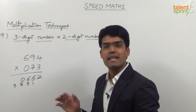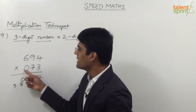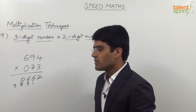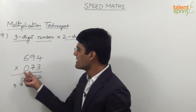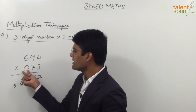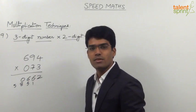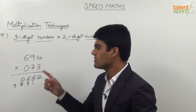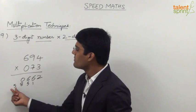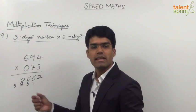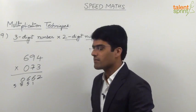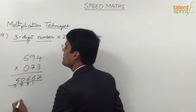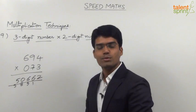The last step is multiplication of hundreds places. Since one of the numbers is a two-digit number, the hundreds place is 0, and 6 × 0 = 0. So 0 is added to the carry of 5, giving us the final answer: 50,662.